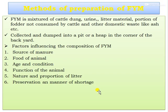The methods of preparation of FYM: FYM is a mixture of cattle dung, urine, litter material, portion of fodder not consumed by cattle, and other domestic waste like ash, collected and dumped into a pit or heap in the corner of the backyard. The factors affecting the composition of FYM depend on the source of manure, food of the animal, age and condition, function of the animal, and the nature and proportion of litter.